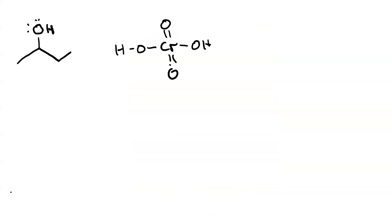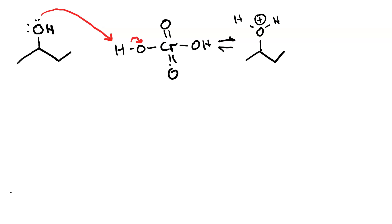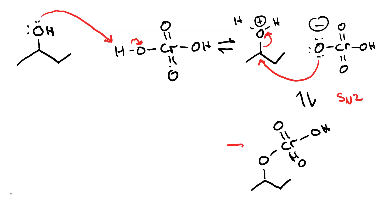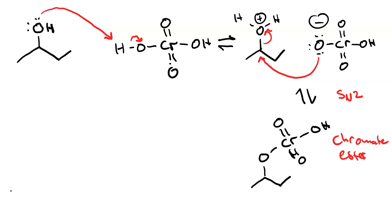The first stage of the reaction mechanism of an alcohol with Jones reagent is proton transfer: the chromic acid donates its proton to the alcohol, giving us water, which is a good leaving group. Then the bichromate ion does nucleophilic attack with loss of that leaving group at the alpha carbon. That SN2 process gives us a chromate ester. The generation of the chromate ester — the proton transfer followed by SN2 — is all considered Stage 1.